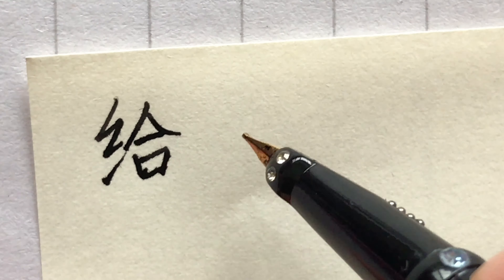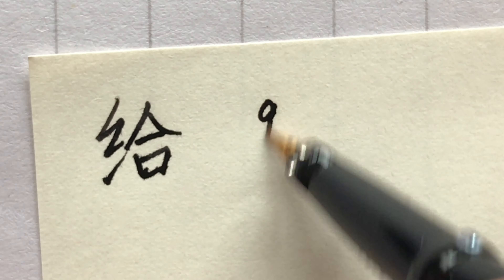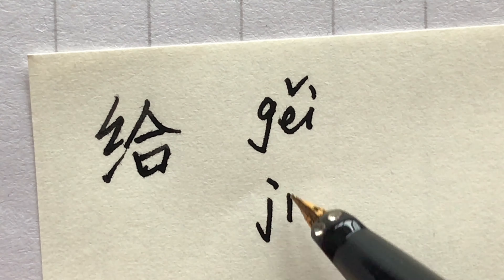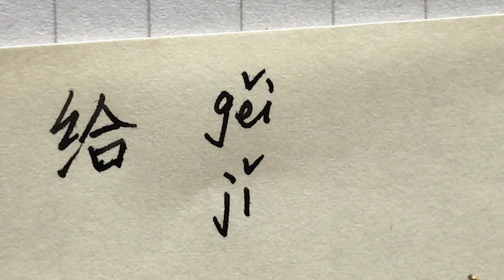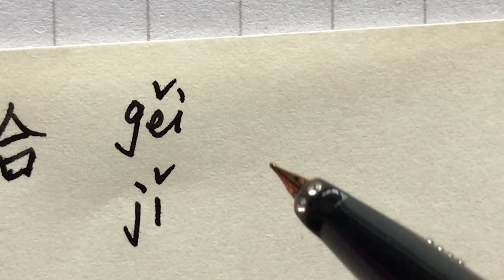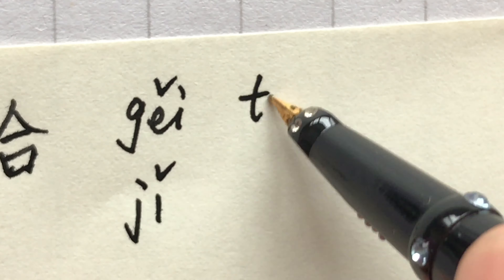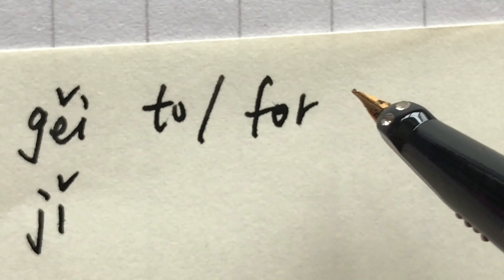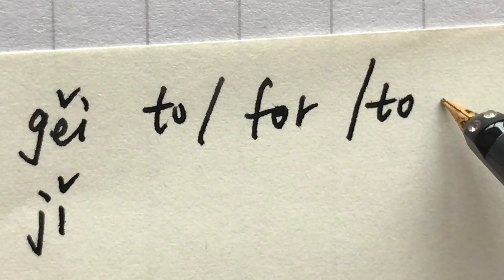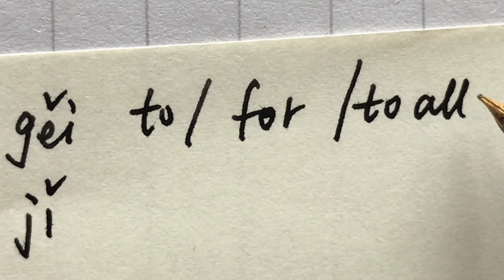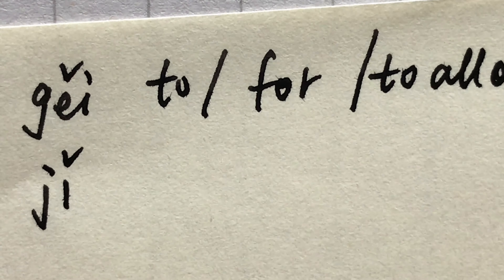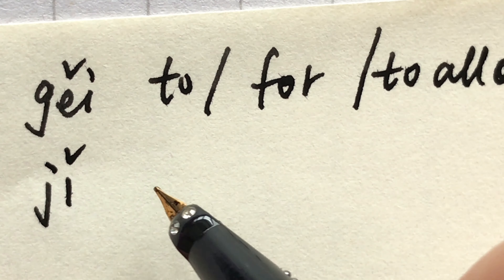This is a polyphonic character. It can be pronounced as 给 (gěi) or 吉 (jǐ). As 给 (gěi), it means 'to', 'for', or 'to give'. As 吉 (jǐ), it means 'to supply'.